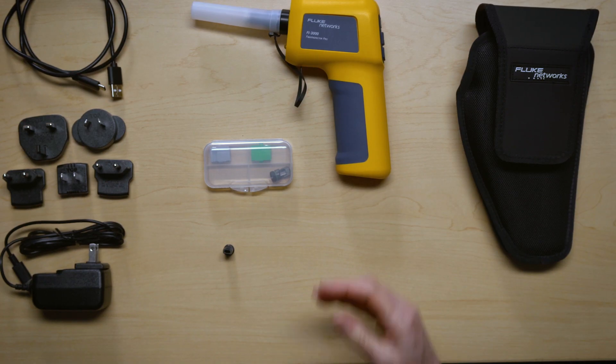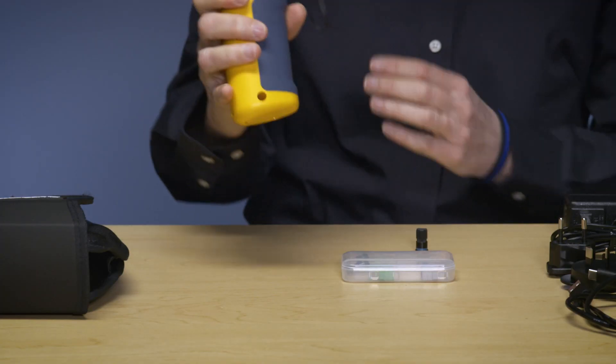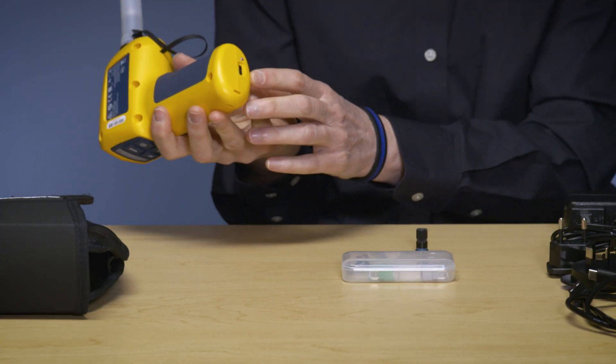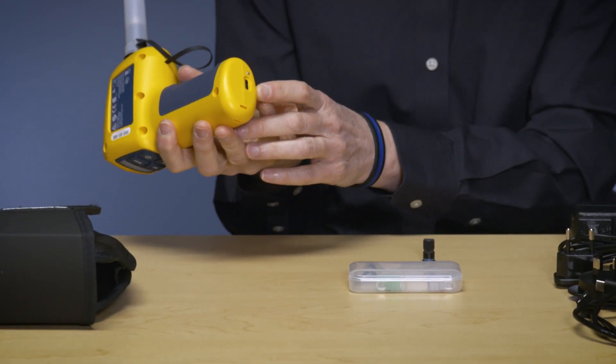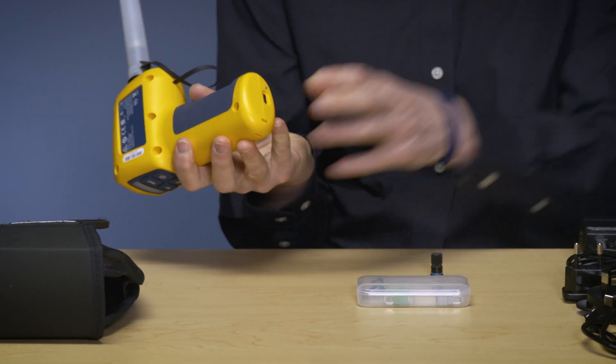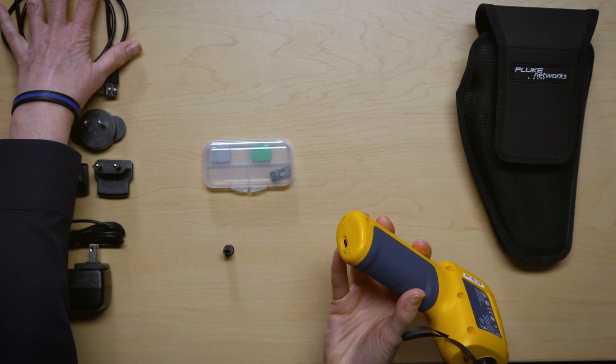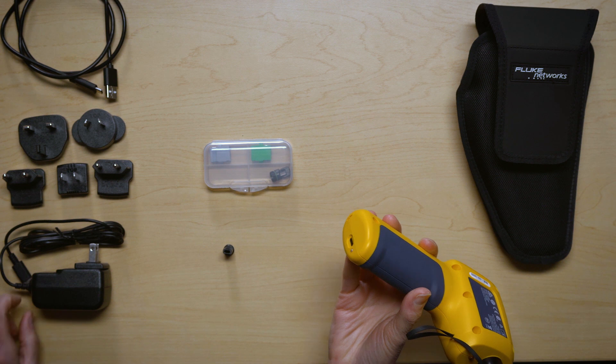Now I'd like to show you some details about the probe itself. The first thing I'd like to show you is on the base or on the bottom of the probe there is a USB-C port that is for connecting it to VersiFiber using the USB cord or for charging it with the charger.